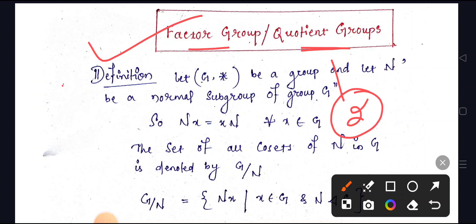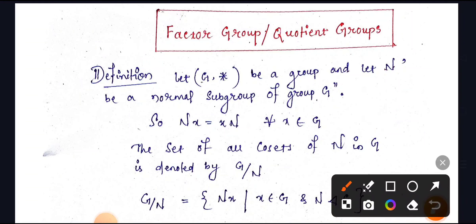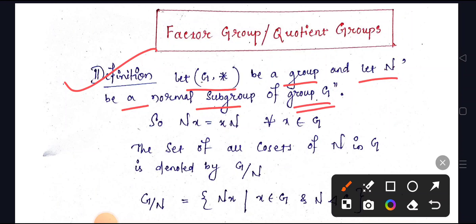Now discussing the definition. The definition states: let G* be a group and N be a normal subgroup of group G. We write G* to denote the group, where * defines the algebraic operation.